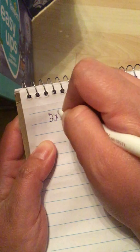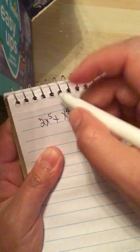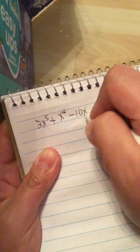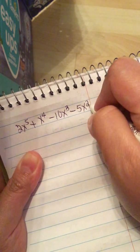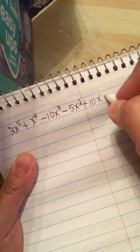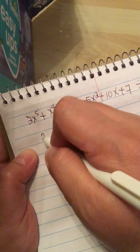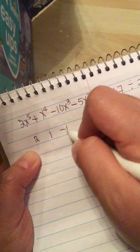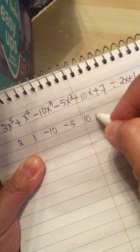So we have 2x to the fifth plus x to the fourth minus 10x squared minus 5x squared plus 10x plus 7 divided by 2x plus 1. So we have a 2, a 1, a minus 10, a minus 5, a 10, and a 7.